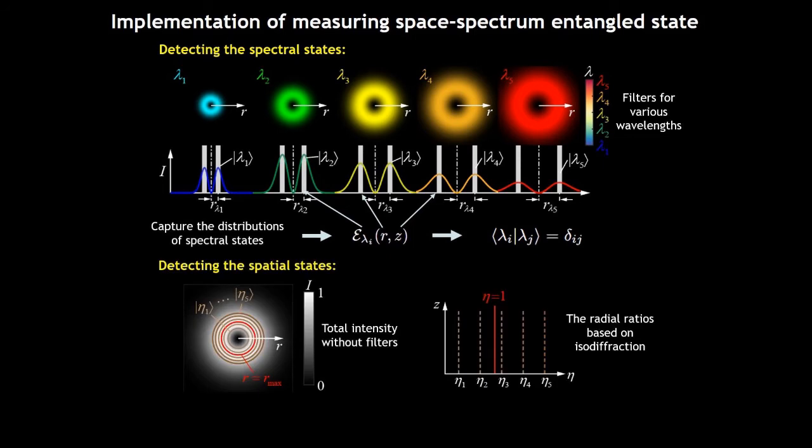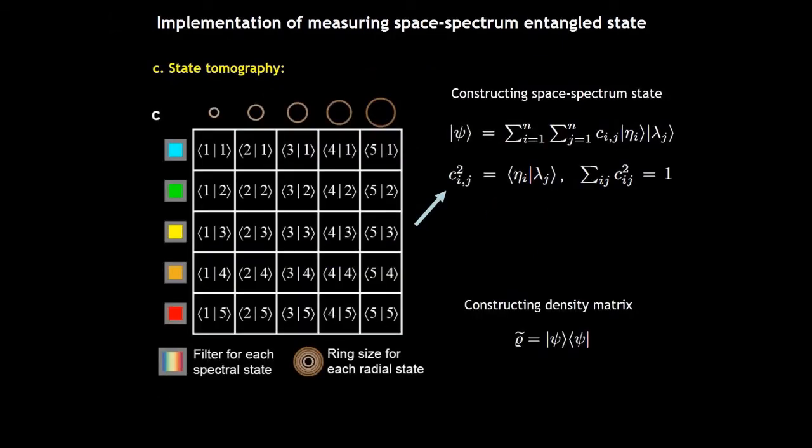For the spatial state, we do not need the filters. We should directly measure the whole field of the beam and record the various ring regions for each radius. And the radius is predicted by the ideal isodiffraction theory. Then we can get the functions of corresponding spatial state.